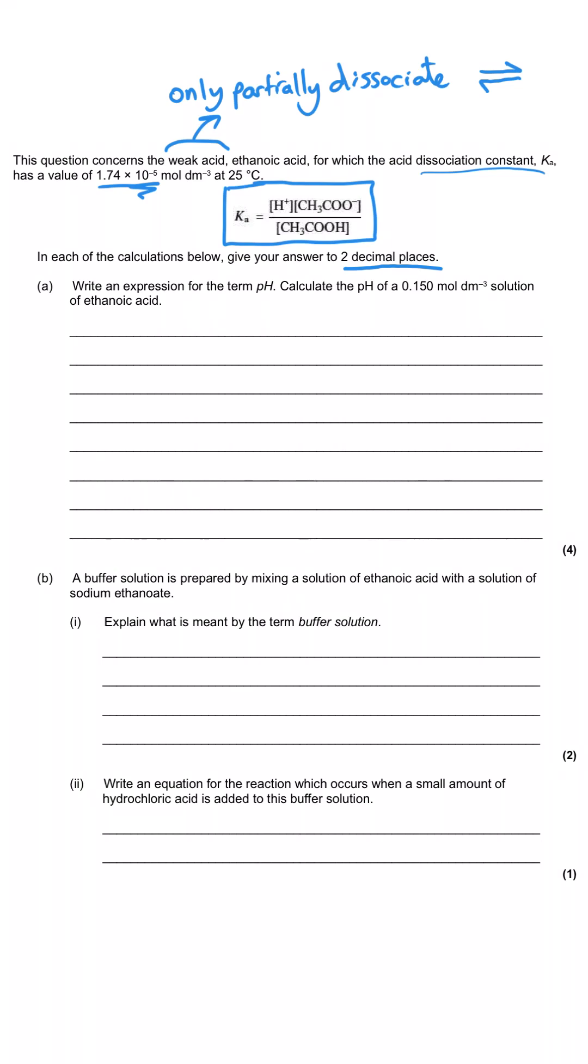Now the first part of the question is only about weak acids. It's not actually about buffers but it's a common question so it's worth looking at here. They've asked us to write an expression for the term pH. Sometimes instead of that they ask us to define pH. They both actually mean the same thing. They want us to write down the fact that pH is equal to the negative log of H plus. So even though they're asking for an expression or a definition, they just want that equation that should hopefully be firmly drilled into your memory by now.